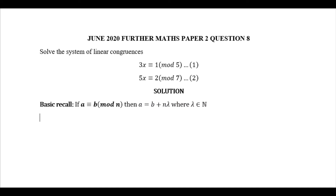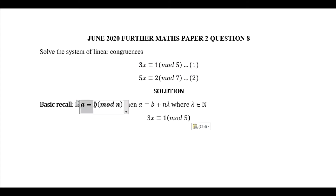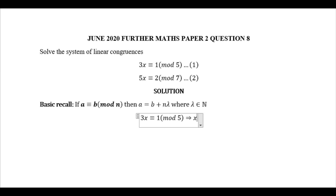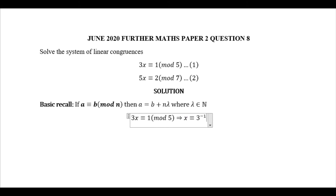The very first equation is 3x ≡ 1 (mod 5). To transform it to the standard case, I will need to multiply both sides of the equation by the multiplicative inverse of 3 in mod 5. Multiplying 3x by the multiplicative inverse of 3 mod 5 gives just x, so x is going to be congruent to the multiplicative inverse of 3 in mod 5, multiplied by 1, mod 5.